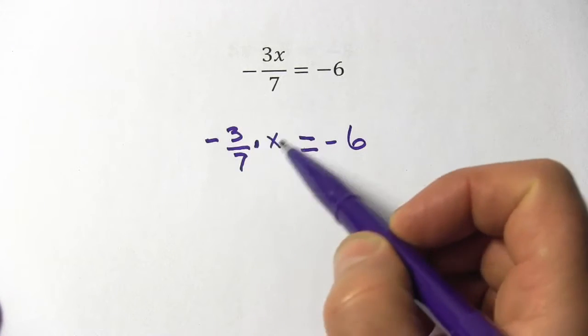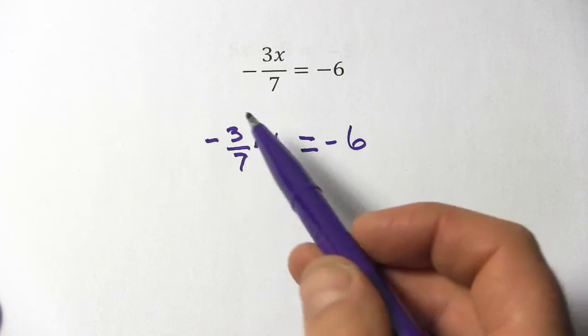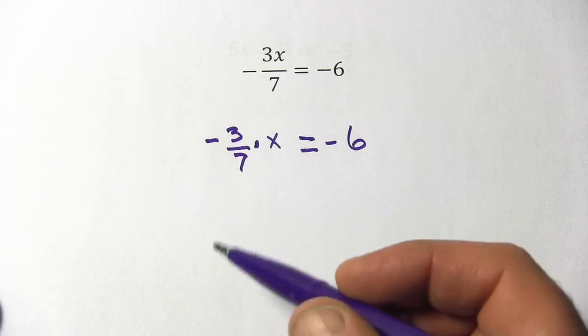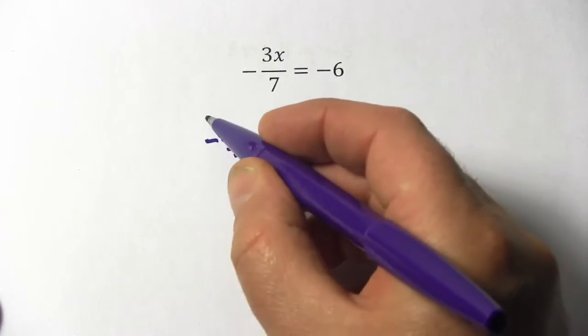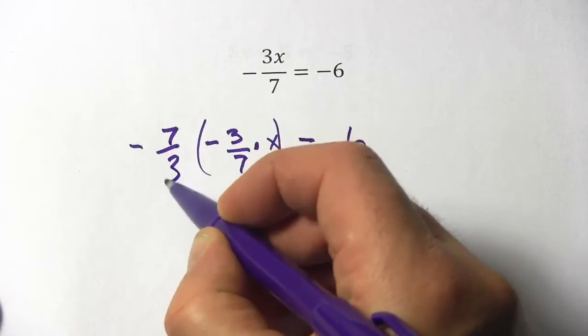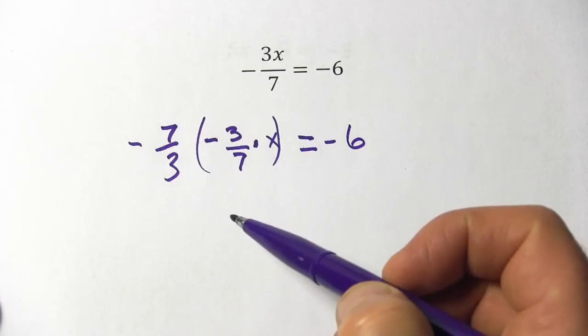Now, if you have a fraction multiplied by x, the way to get rid of that is to multiply by its inverse or its reciprocal. So if I multiply this by negative 7 thirds, so all I did was flip this fraction upside down, a wonderful thing is going to happen.